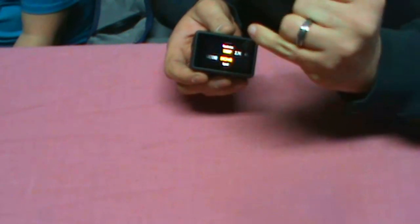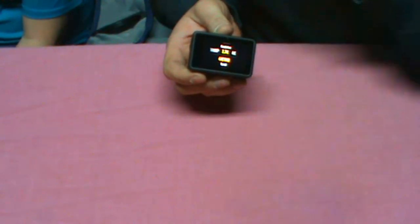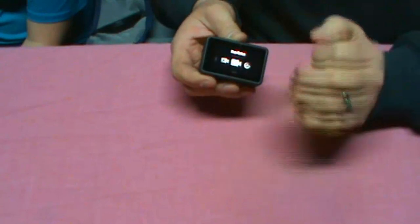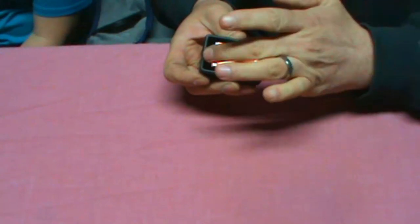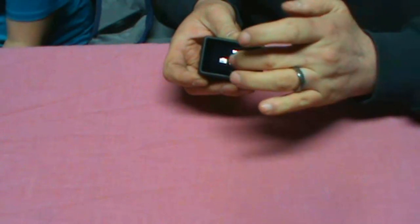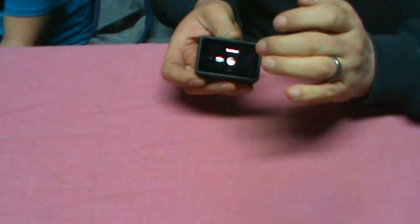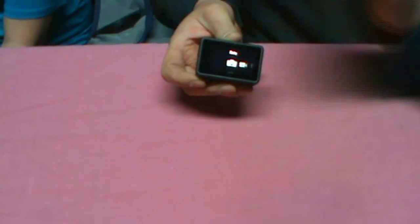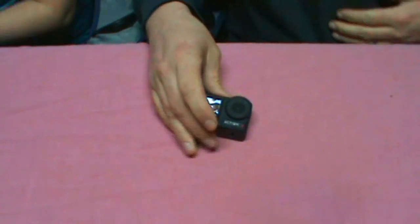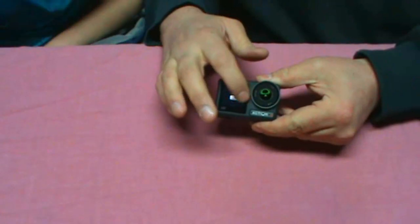If you swipe up you get to pick your resolution, 1080, 2.1 or 2.7K or 4K. And then you can pick your speeds as to how you want to film, 4 by 120 or 8 by 420. Obviously the higher resolutions are locked.